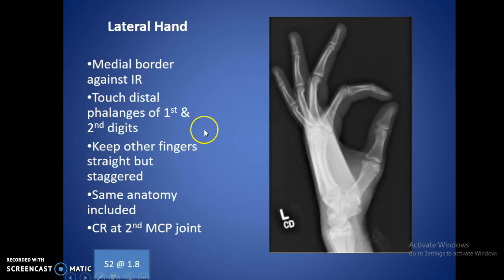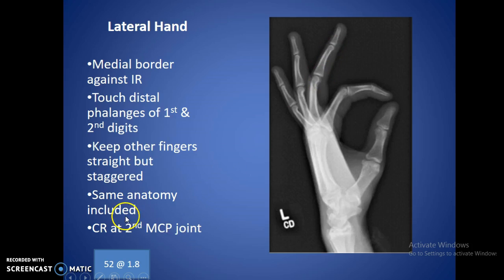For the lateral hand, the medial border goes against the IR, so the fifth finger should be touching the IR. Touch the distal phalanges of the first and second digits — just make a little OK sign — then stagger out the third, fourth, and fifth fingers across there. That way you'll be able to see the joint spaces clearly at the distal and proximal ends. Same anatomy is going to be included. Center right around the second MCP joint. The technique has been going up a little from the PA to the oblique to the lateral, basically to adjust for getting through more bones and needing a little more penetration.